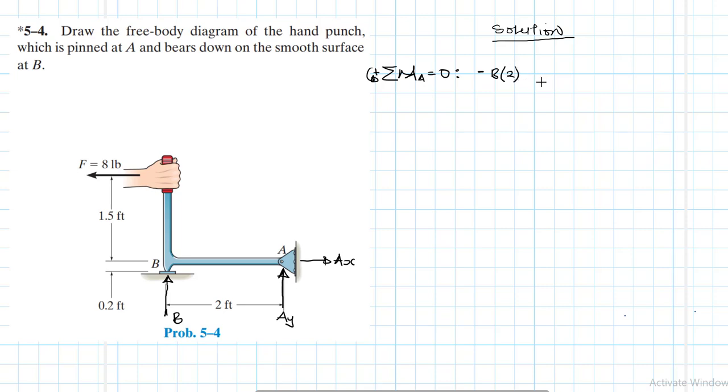What else? I have an anti-clockwise which is positive moment, 8 pounds force times the lever arm about point A, which is 1.5. Is it about 1.5? Yes, about 1.5, because this is the distance that we are looking at.